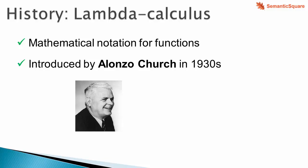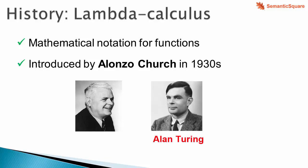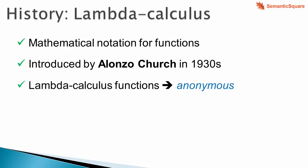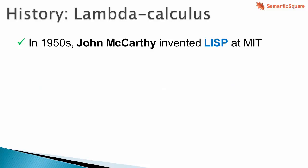Lambda calculus was introduced by the famous mathematician Alonzo Church, who was also a PhD advisor to Alan Turing — who we know is considered the father of computer science. All functions in lambda calculus are anonymous, that is, they are nameless. Here is an example lambda calculus expression: X is the argument to the anonymous function represented by lambda, and the body follows the dot, where the square of the input argument is computed.